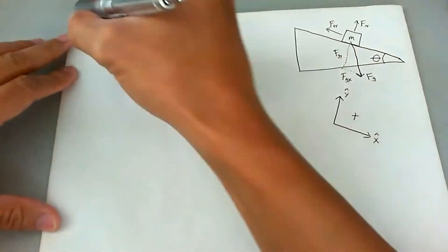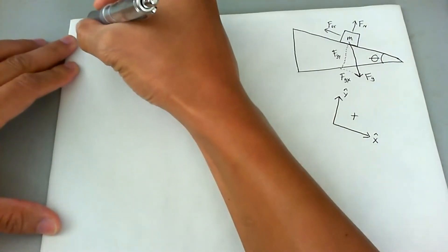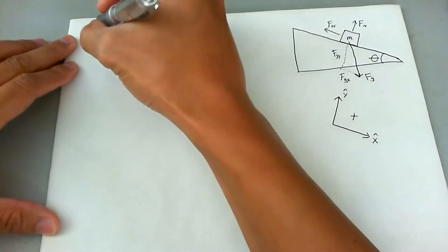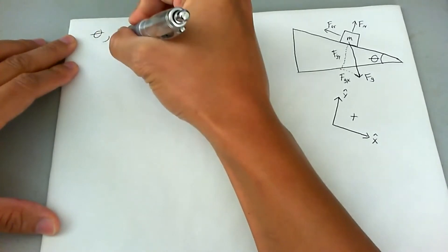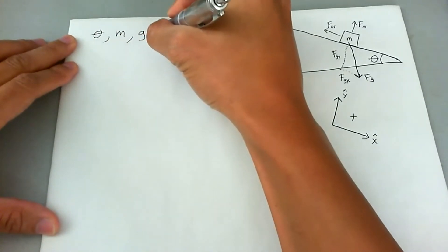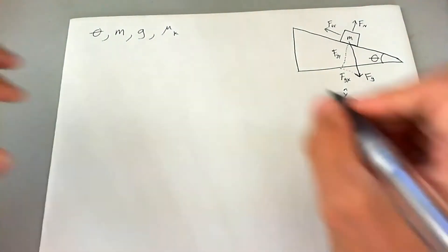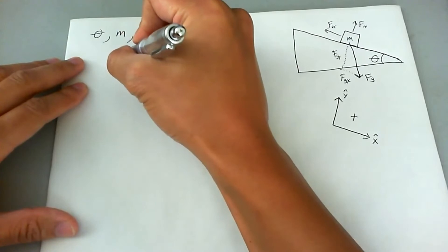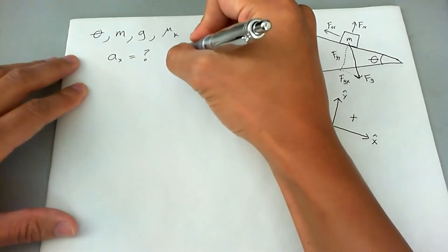Let's talk about what we do know. It's not directly given to us numerically, but we know what theta is, we know the mass of the box, we know g, and we know the coefficient of kinetic friction. What we need to find is the acceleration in the x direction — which we can just call the acceleration.